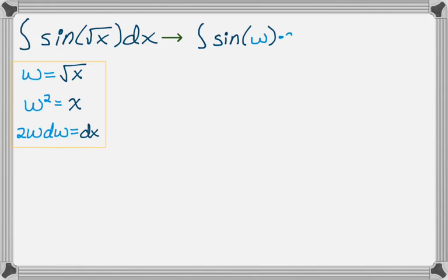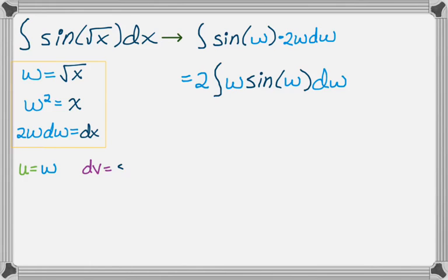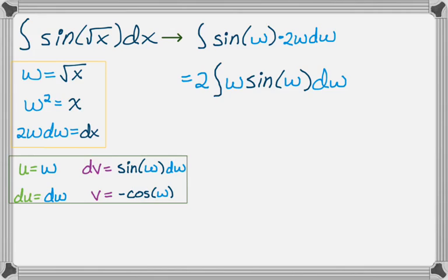So if we do that we get this new integral, which is just sine of w times 2w dw, and now what we're going to do is rearrange that and look at it. This is something you actually could use a table on because the derivatives of w go to zero, but I'm going to do it just using straight up integration by parts. So I need a u, which I'll make w, and a dv, which is sine of w dw. So du is dw, and then v is negative cosine of w. Remember the derivative of cosine is negative sine, so when you integrate sine you need to get negative cosine.